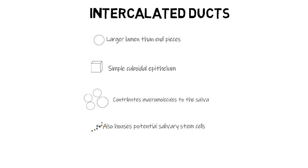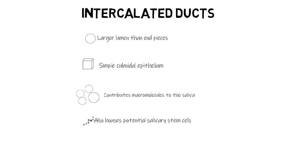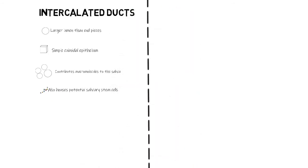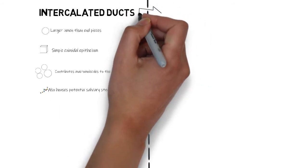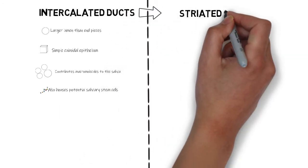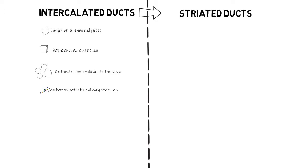Several ducts that drain individual end pieces join to form one large intercalated duct, and this duct may join once again before emptying into the next duct. This next duct, into which the intercalated duct drains the saliva, is known as the striated duct.